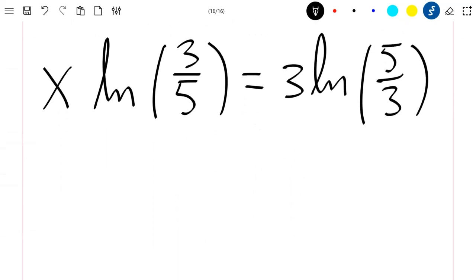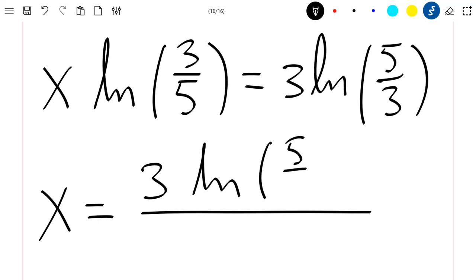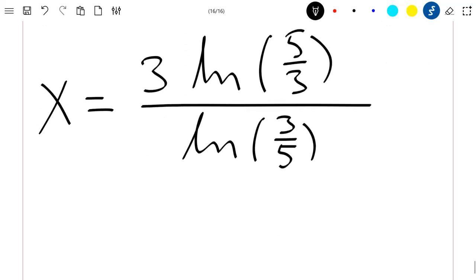Now we see from this equation, x equals 3 ln of 5 divided by 3, divided by ln of 3 divided by 5. Let's simplify this result.